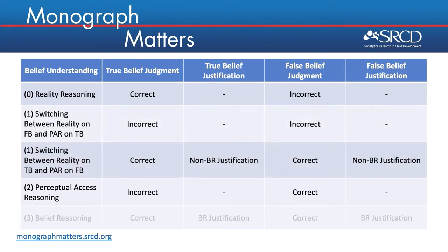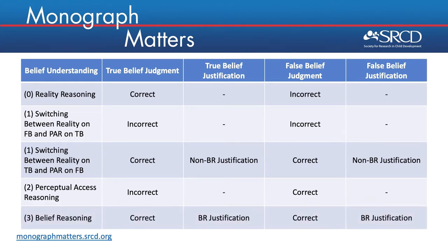Children can also be scored as switching between reality reasoning and perceptual access reasoning, and there are two patterns of responses that can lead to this score. In the first switching pattern, children provide incorrect judgments on both the true and false belief tasks. In the second switching pattern, children provide correct judgments on both tasks but are unable to give belief reasoning justifications on both tasks. Finally, with belief reasoning, children provide a correct judgment on both tasks and also provide belief reasoning justifications on both tasks. These strategies are scored on an ordinal scale where Reality Reasoning is scored as 0, Switching as 1, PAR as 2, and Belief Reasoning as 3.